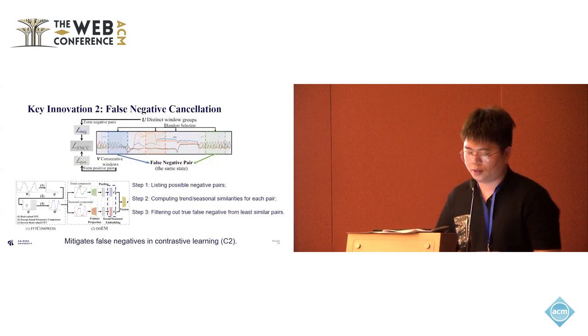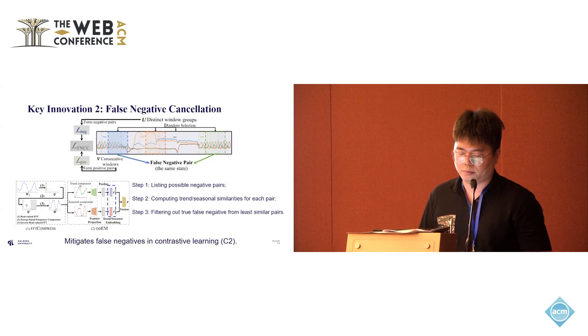Our second key innovation focuses on mitigating the false negative in contrastive learning. Contrastive learning in USD maximizes the similarity between positive pairs while minimizing the distance between negative pairs. However, the false negative sampling problem occurs in this process. The current method randomly samples windows into groups, assuming each group represents different states. This can lead to a situation where different groups have the same states.